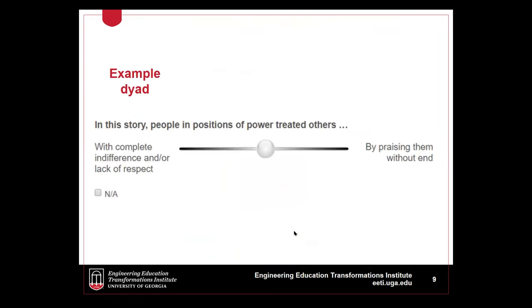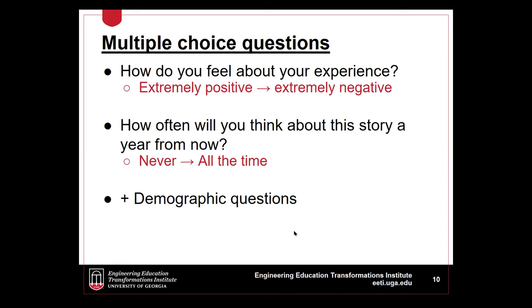The second type of question in the signification framework is called a dyad — participants move the dot to the position on the dyad that fits with their story. Here are some examples of multiple choice questions; participants' responses to these can be used to filter the data.